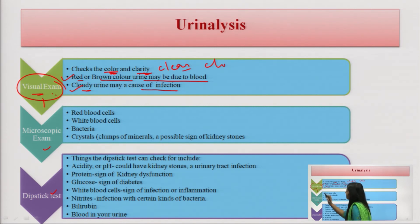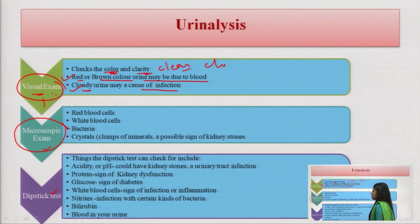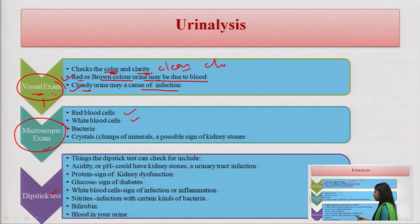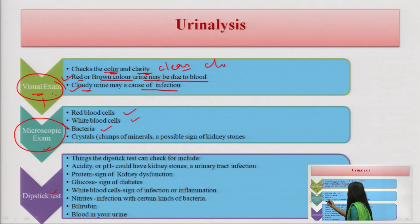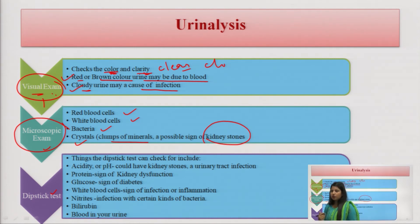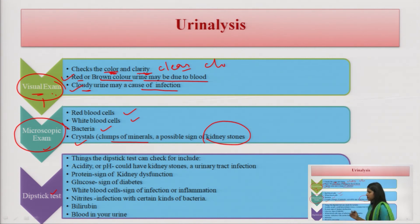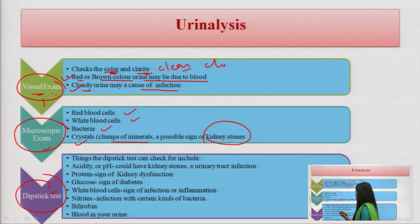In microscopic examination, the urine is analyzed for: high RBC levels — indicating internal bleeding; high WBC levels — indicating infection; presence of bacteria — indicating bacterial infection; and crystals (clumps of minerals) — which are signs of kidney stones.